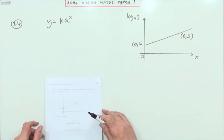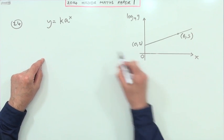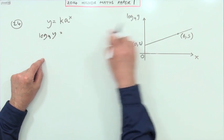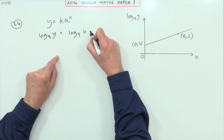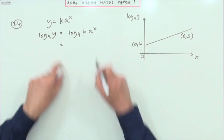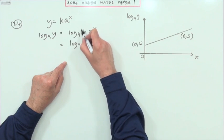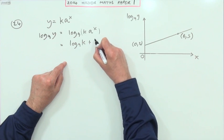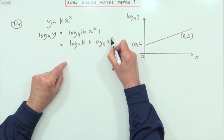So I'll do it that way first. This is log base 9. If I take log base 9 of y, which I would have to do to make it match that, I'll have to take log base 9 of the other side. Then I start splitting this up: log base 9 of a product means it's log base 9 of k, plus the sum of that with log base 9 of a to the x.